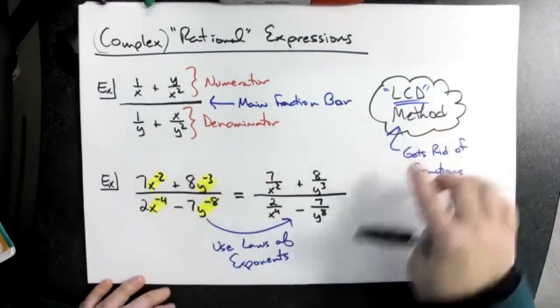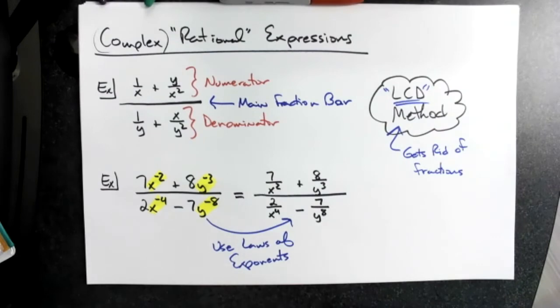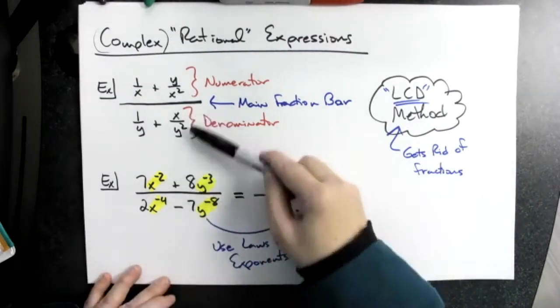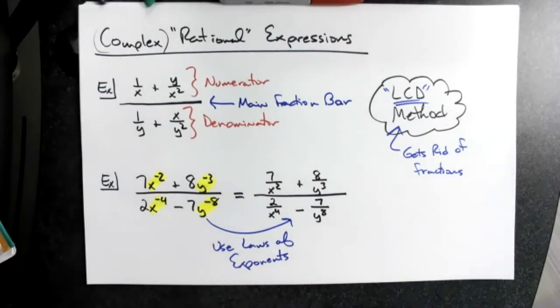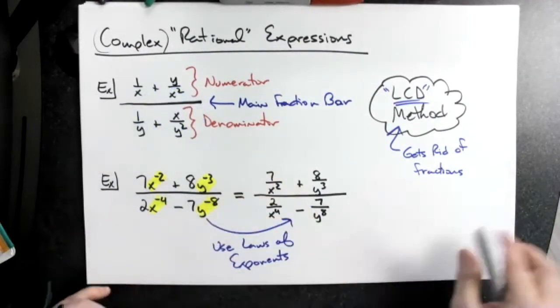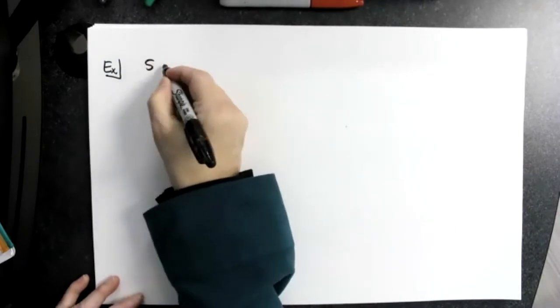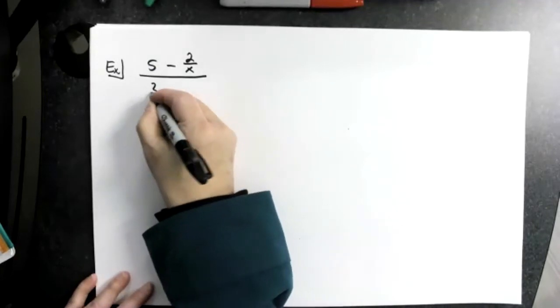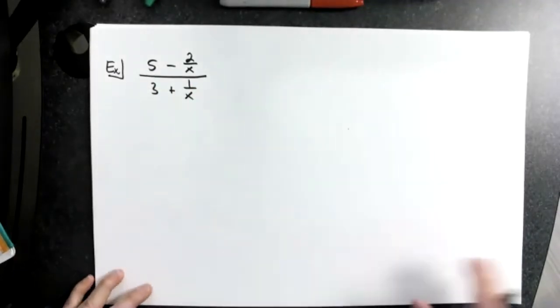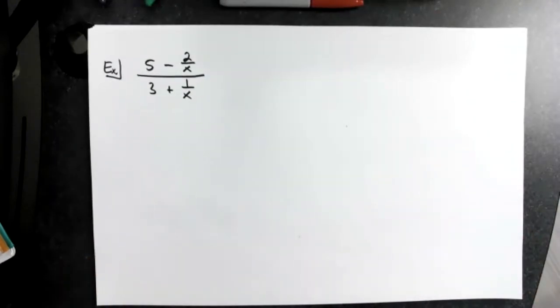So those are the two different types of complex rational expressions we're going to deal with. Let's look at one that's a little less scary — that last one had four fractions, so let's start with an easier one. Say we've got a whole number 5 minus 2 over x, all over 3 plus 1 over x. Not as many fractions — a lot less.